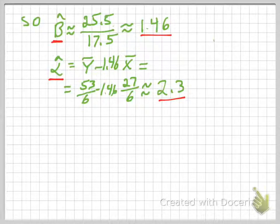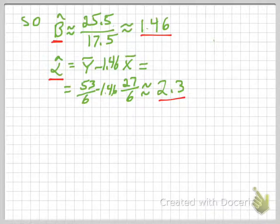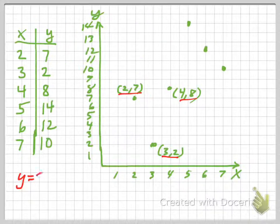So what does this look like then? Well, here's the Cartesian scatter plot of my points, right? So I have 2.7 here, then I have 3.2 down here, then I have 4.8 here. So my equation is y equals, let's go back and check, 2.3 plus 1.46x.